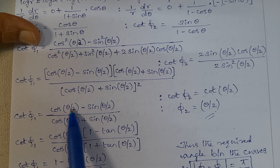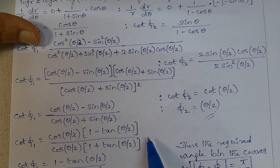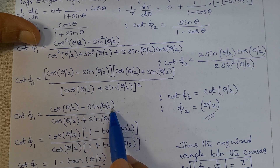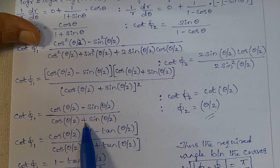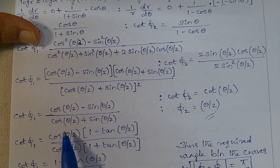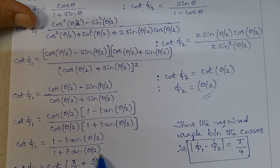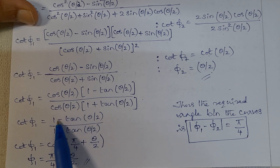cos(theta by 2) times 1 is cos(theta by 2). cos(theta by 2) times tan(theta by 2) is sin(theta by 2), because tan equals sin over cos, and cos cancels leaving sin(theta by 2). In the denominator, take cos(theta by 2) outside: cos(theta by 2) times 1 is cos(theta by 2), plus cos(theta by 2) times tan(theta by 2) is sin(theta by 2). The cos(theta by 2) factors cancel, giving (1 minus tan(theta by 2)) divided by (1 plus tan(theta by 2)). So cot phi 1 equals (1 minus tan(theta by 2)) divided by (1 plus tan(theta by 2)).